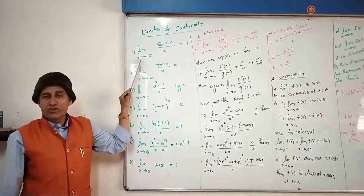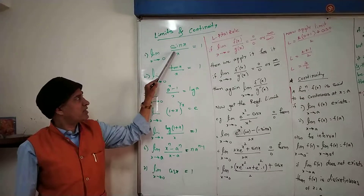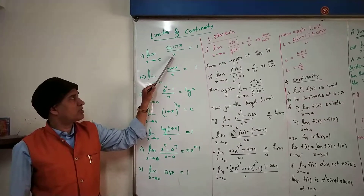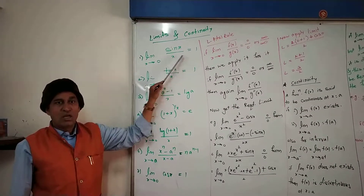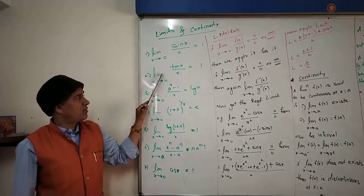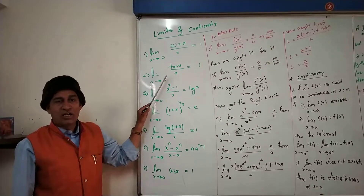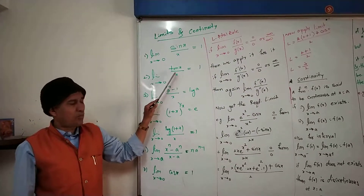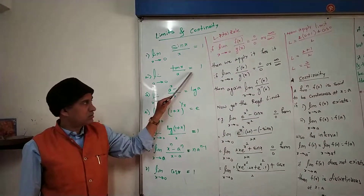The first standard limit: lim x tends to 0, sin(x) upon x is equal to 1. The second standard limit: lim x tends to 0, tan(x) upon x is equal to 1.